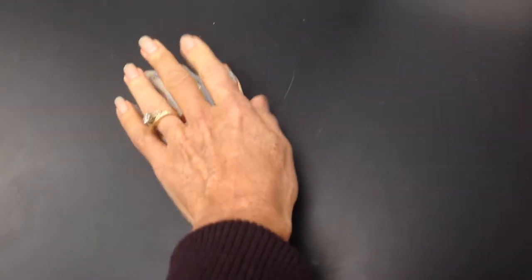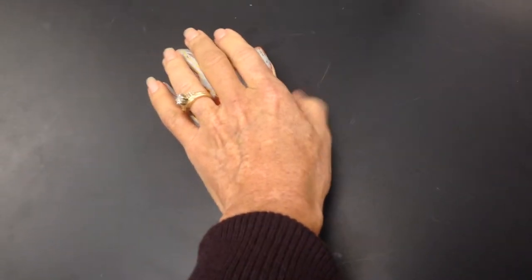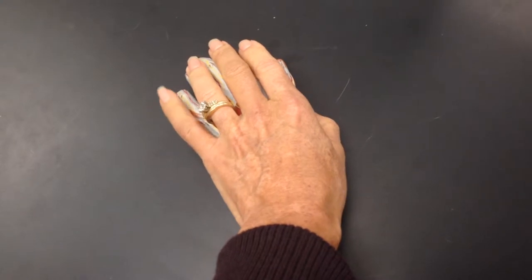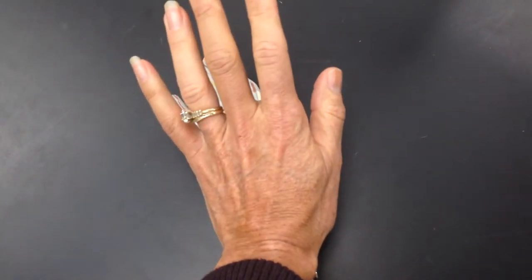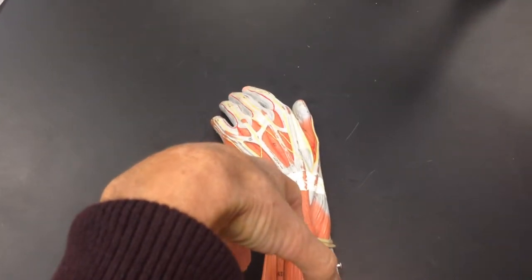First thing we have to remember is that the thumb side is the radial side, the pinky side is the ulnar side, this is extension, and this is flexion.